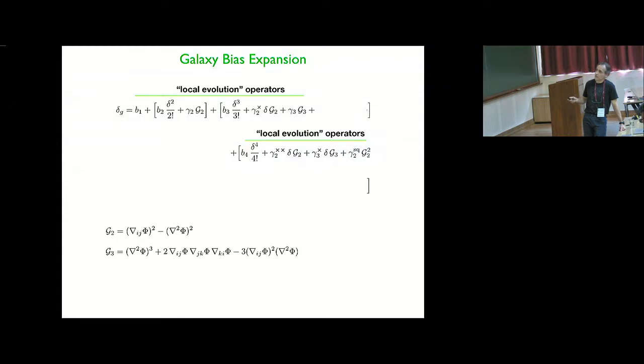And so basically, you can right now augment the local bias expansion by these terms. And then, so this will be the quadratic order, cubic order, and fourth order. And if nonlinear evolution from Gaussian initial conditions was local in the initial fluctuations, that's what happens, for example, in the so-called Zeldovich approximation,